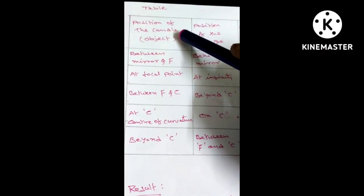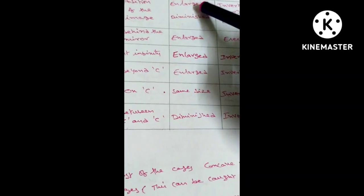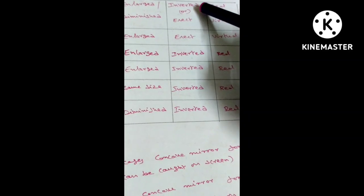Table: Position of the candle object, position of the image, enlarged, diminished, inverted or erect, real or virtual.